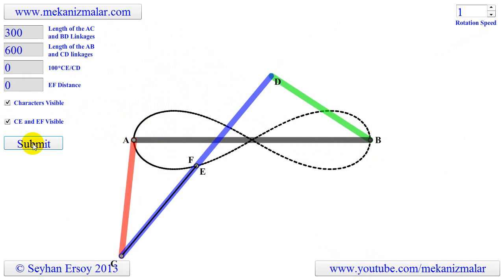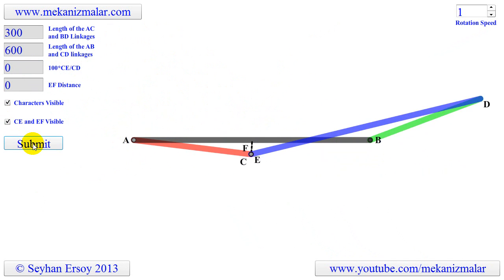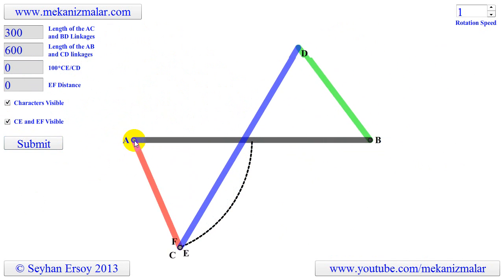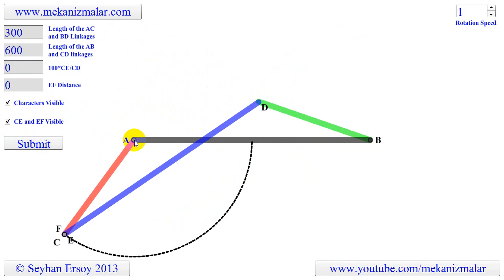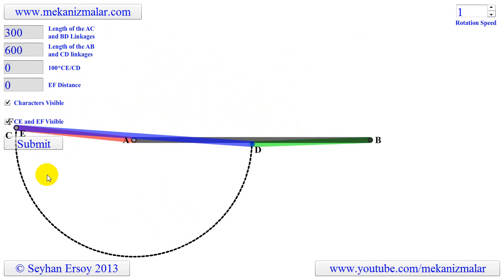We can show this by first making CE distance equal to 0. As you see, the curve becomes a circle around A and it moves with a uniform speed.